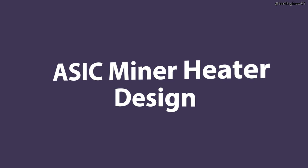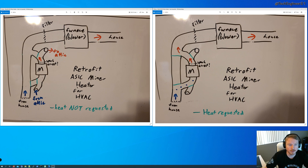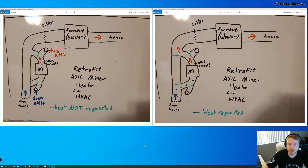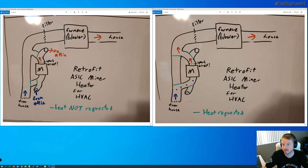I wanted to go over my design considerations and whiteboarding sketch from when I was getting started with the project. I knew I wanted to get my Bitcoin miners in line with my furnace so I could use them to heat my house. This is the original sketch. On the right side you can see 'retrofit ASIC miner heater for HVAC — heat requested,' showing the overview of my furnace and ducting. Air comes in from the house, goes through the furnace, and back out — that's how an HVAC works, it pulls in cool air, heats it up, and puts it back in.